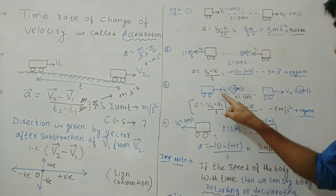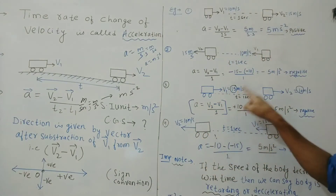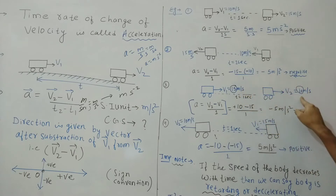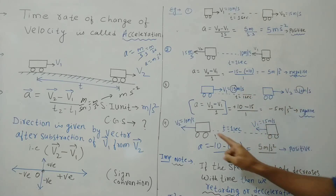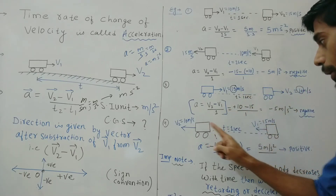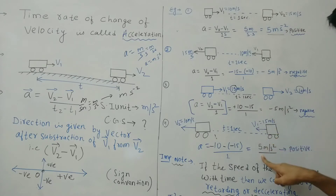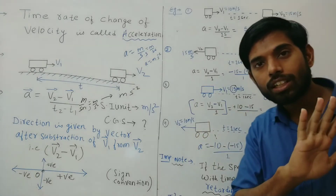Understand: in example 3, the speed decreases from 15 to 10 and acceleration is negative. In example 4, the speed also decreases from 15 to 10 but acceleration is positive. So acceleration being positive or negative does not determine retardation by itself — retardation depends only on whether speed decreases.